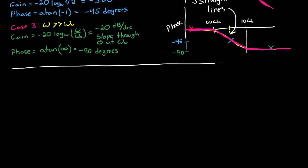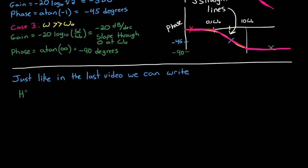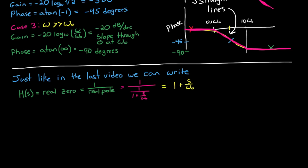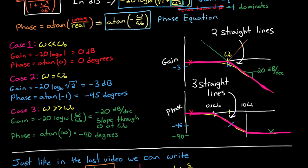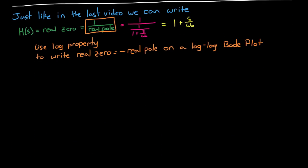You might ask how to determine the frequency response of a transfer function with a single zero without repeating all the math. We can write a transfer function with a real zero as 1 over a real pole — that is, 1 divided by 1/(1 + S/ω₀), which is just 1 + S/ω₀. Because we're plotting on a log-log scale Bode plot, the real zero becomes the negative of a real pole. So the gain slopes up at +20 dB per decade, and the phase gradually increases up to +90 degrees.